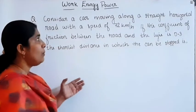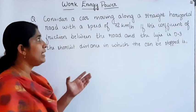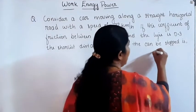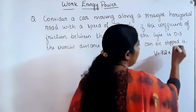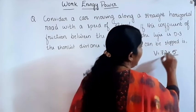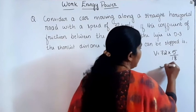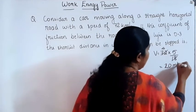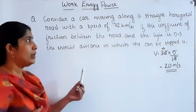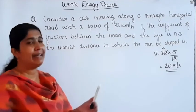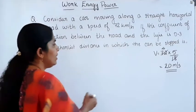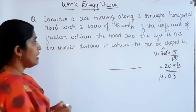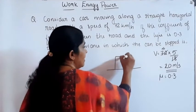Next question: consider a car moving along a straight horizontal road with a speed of 72 km per hour. Converting to meter per second by multiplying by 5/18: 72 × 5/18 equals 20 meter per second. The coefficient of friction between the road and tire is 0.3, and we want to find the shortest distance in which the car can be stopped.